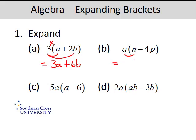OK, a times n and a times, and it's best to think of this as negative 4p. So a times n is an, subtract a times 4p is 4ap.